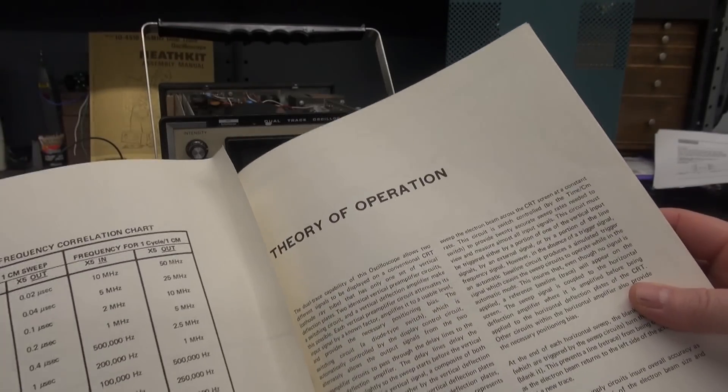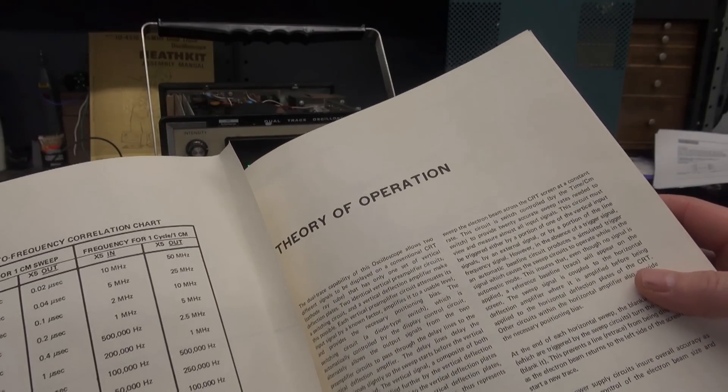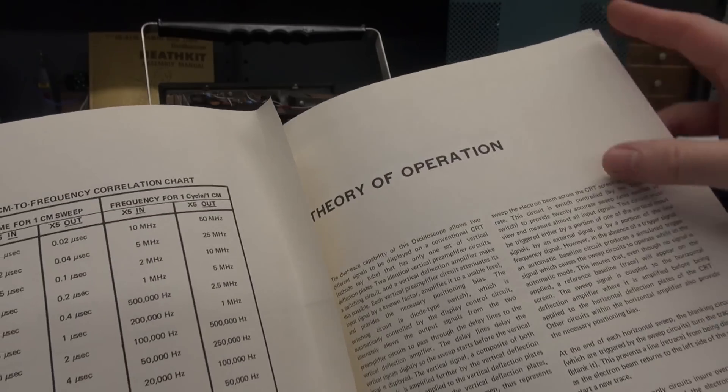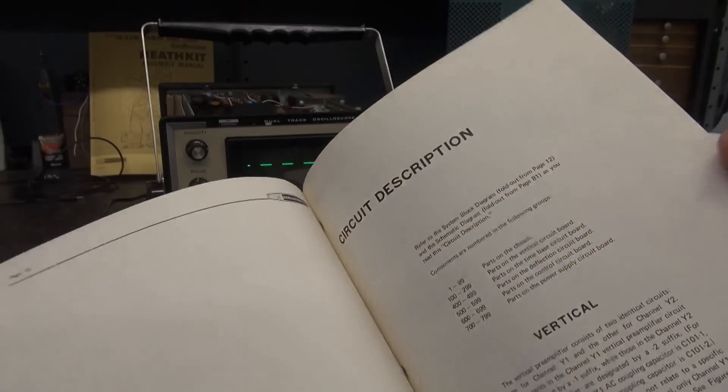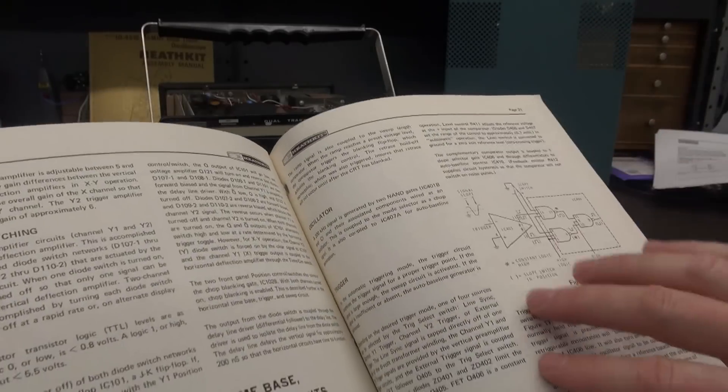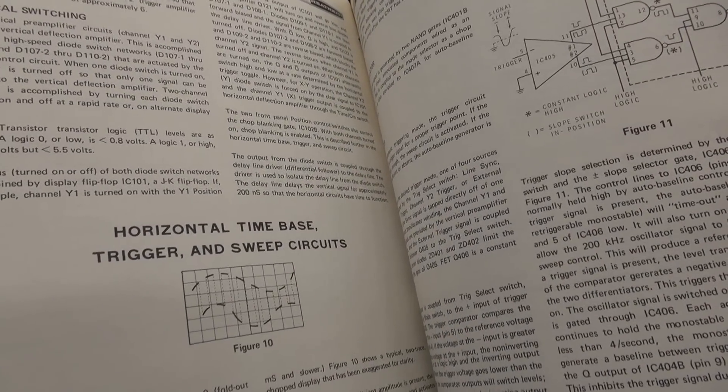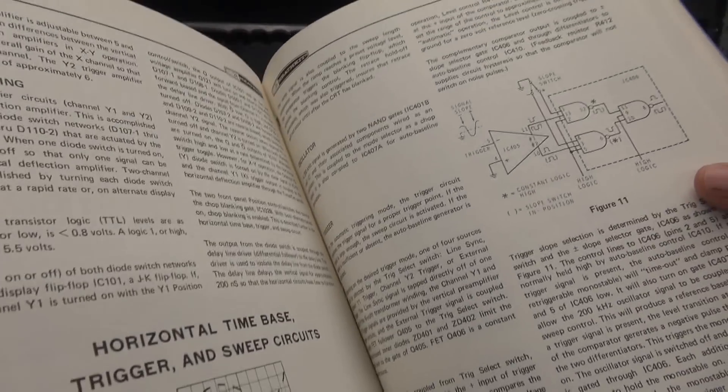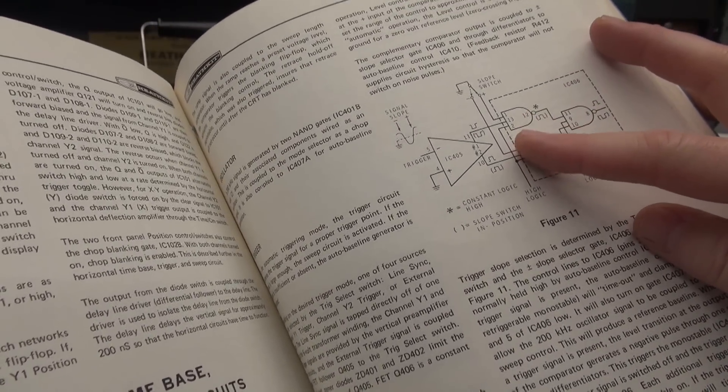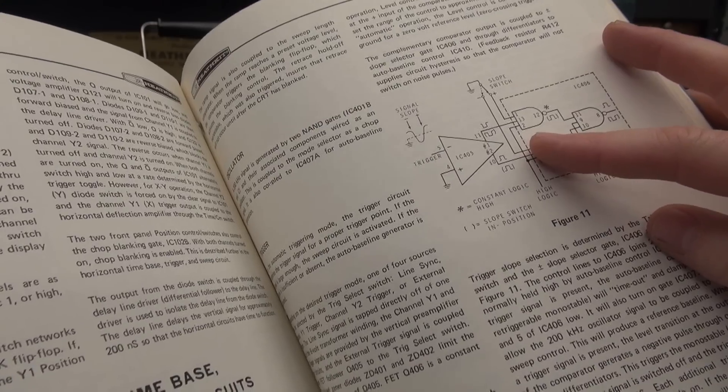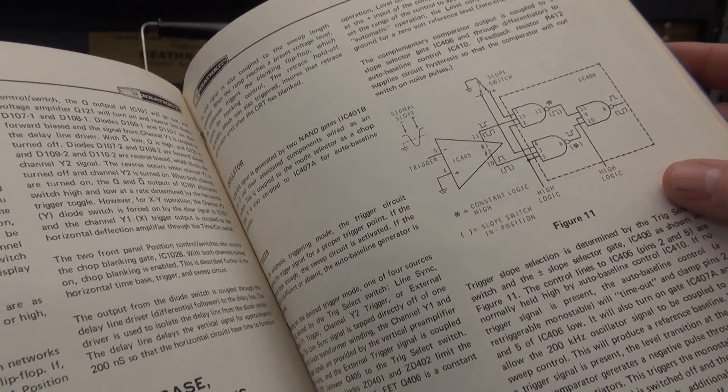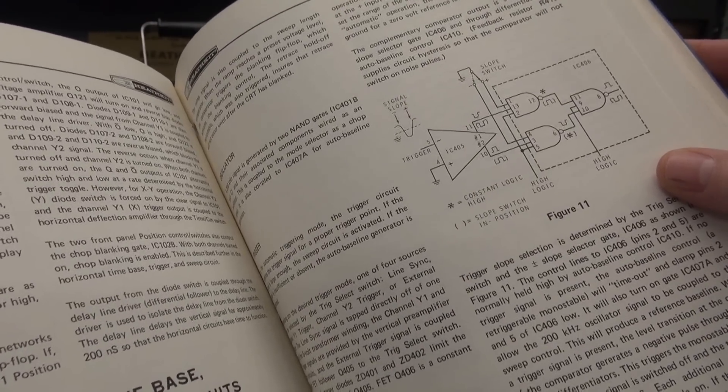Obviously the first thing you really want to do is get familiar with the circuitry. So I always read through the theory of operation, especially for the area that I'm concerned with. And if you flip through here, you will find the horizontal and triggering circuit description. So you want to read this very carefully, especially when they're talking about IC405, because guess what its job is? Yeah, that's the triggering chip. So where's the first place to go? IC405.